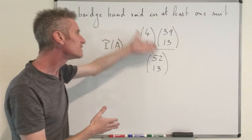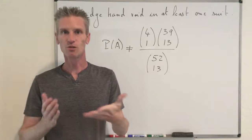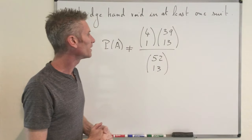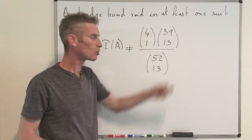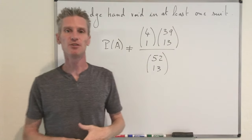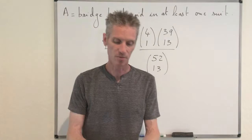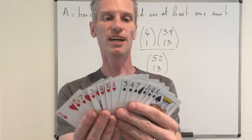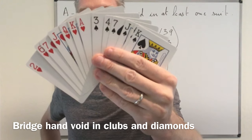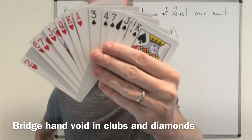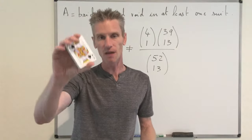It seems this should give the correct probability, but that's not the case. The reason this number slightly overestimates the probability is because of bridge hands like this one: a bridge hand containing only spades and hearts, with no clubs or diamonds. This bridge hand is void not in one suit, but two suits — void in both clubs and diamonds.